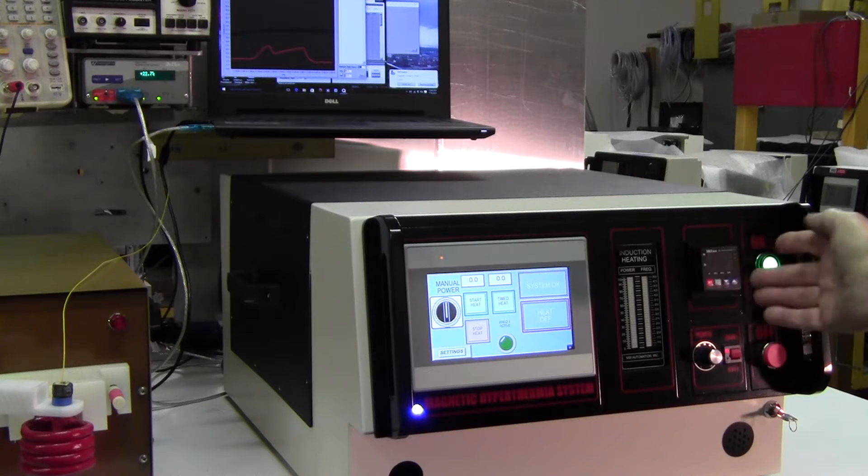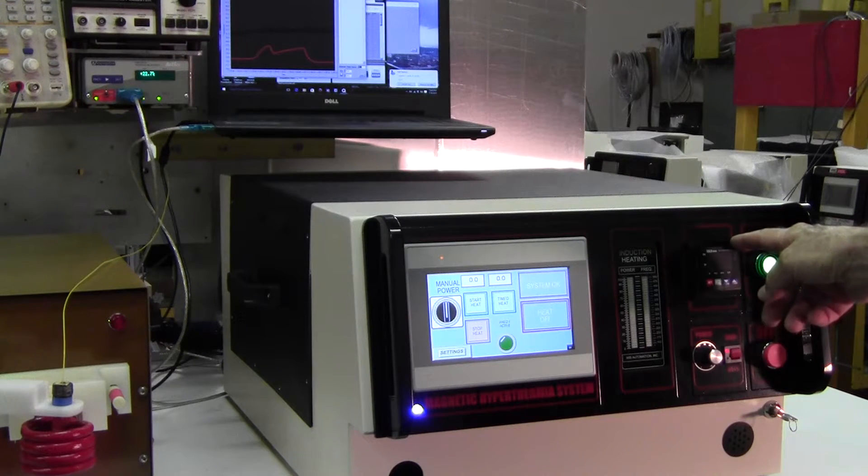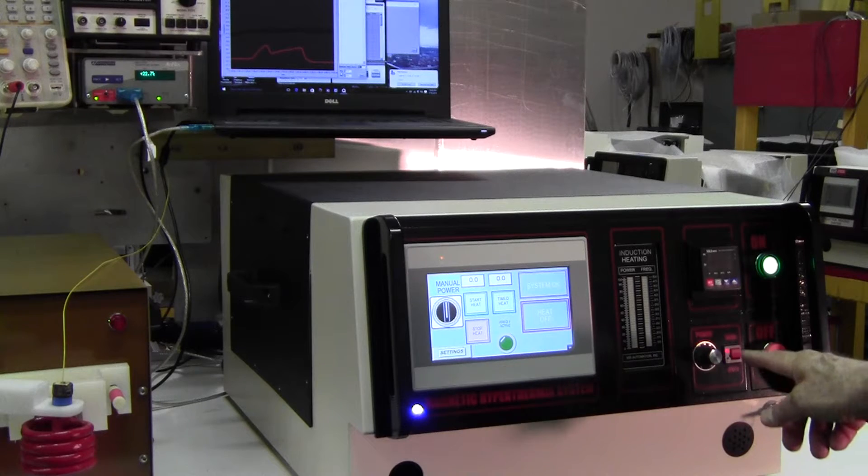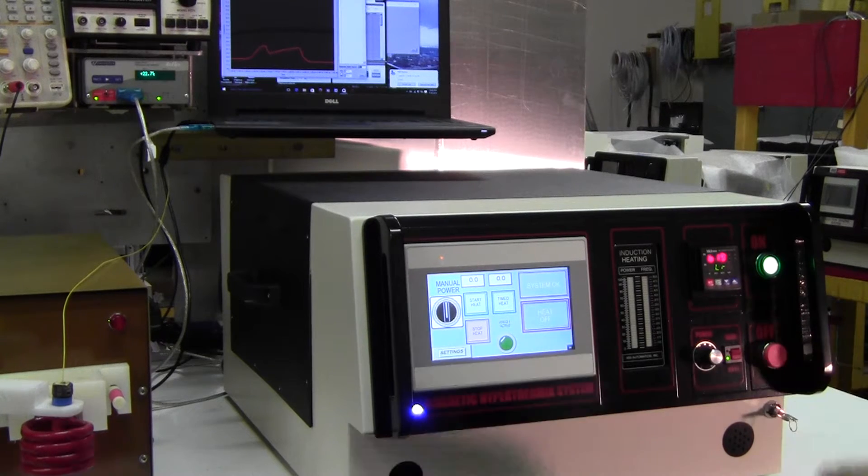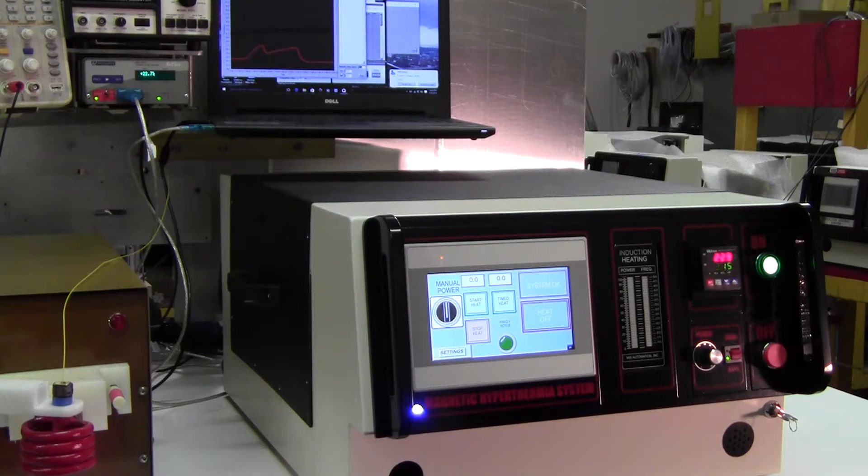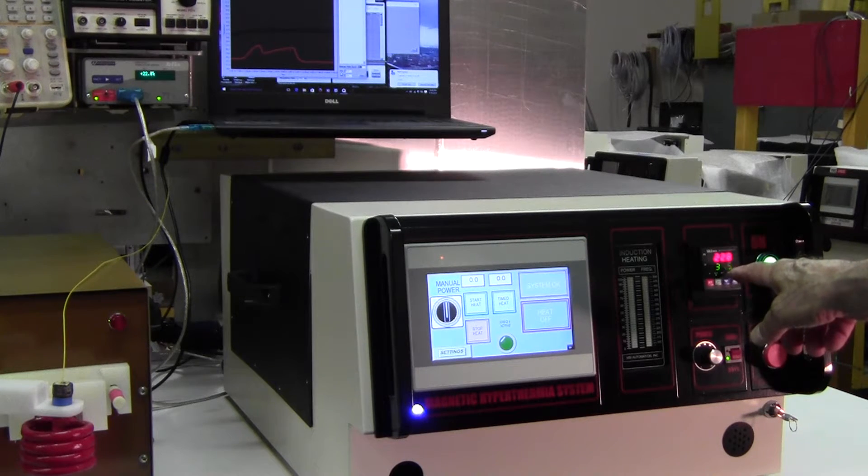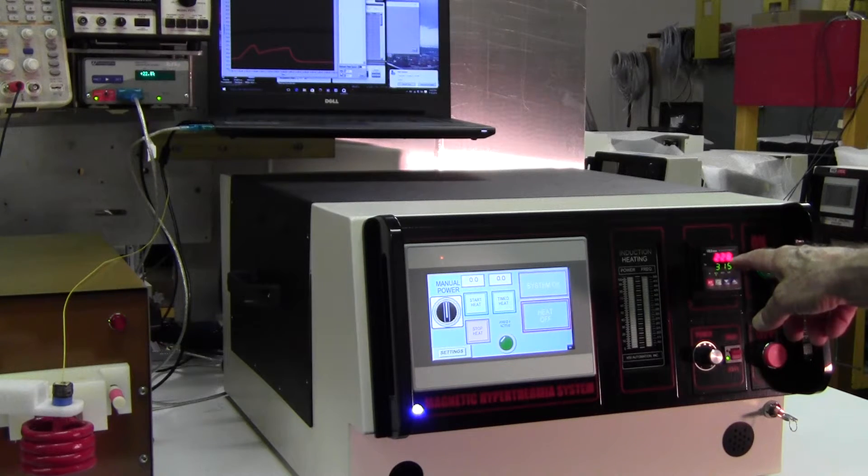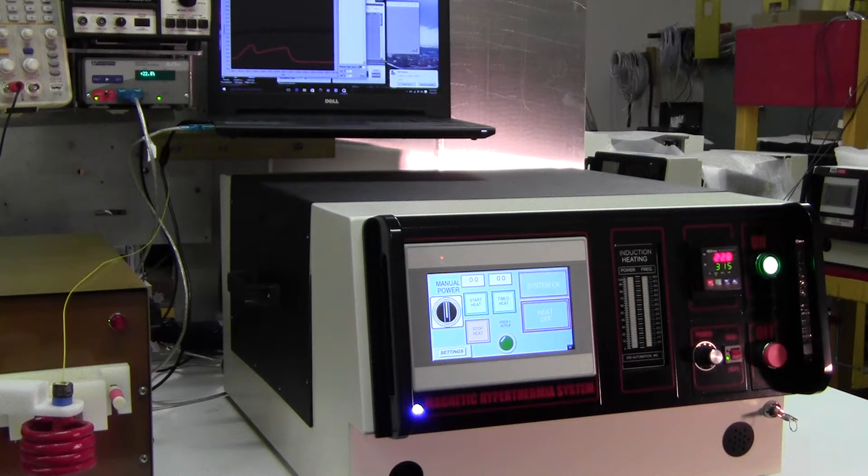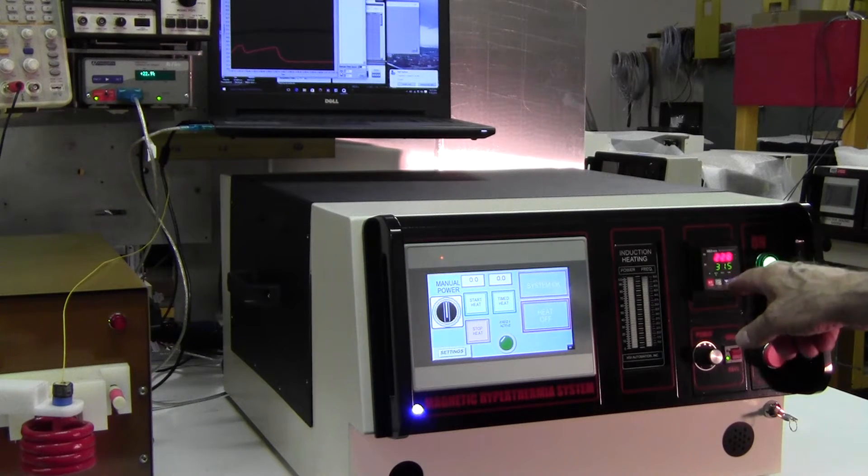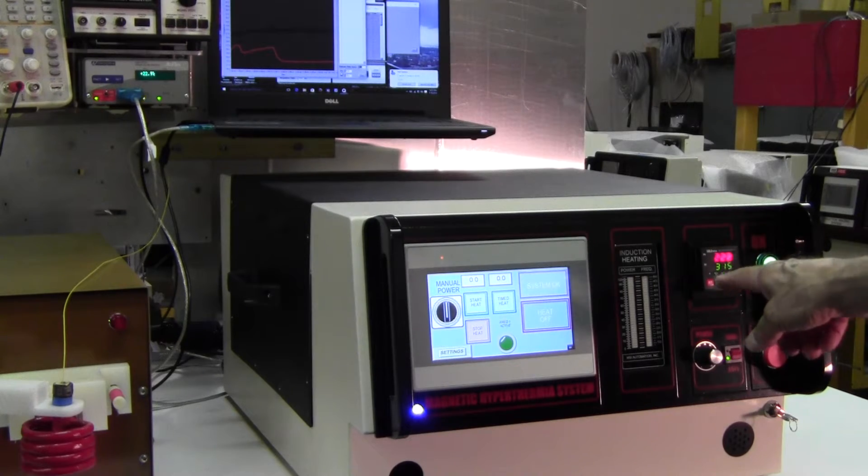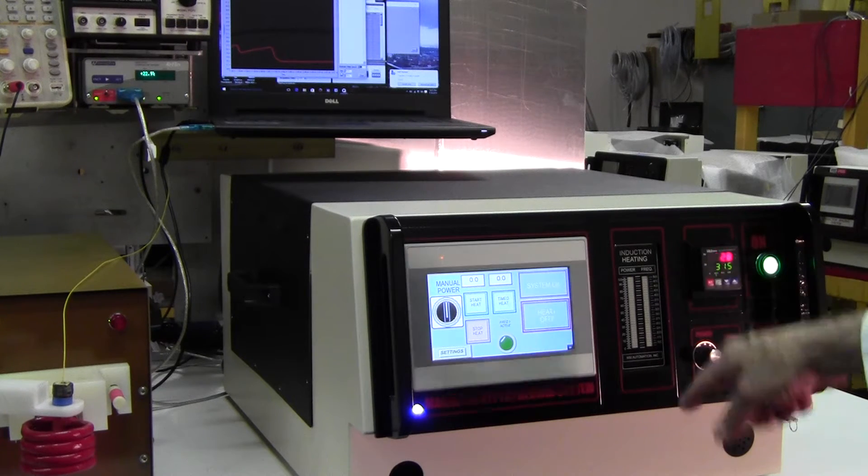The systems from MSI come with a sophisticated temperature controller. All you got to do is push that button. Right now I've got it set for 31.5 degrees centigrade, and we're measuring at 22.8. So what we want to do is we'll hit the foot switch and we'll keep the power on until the temperature reaches the set point, at which point the power will modulate automatically.